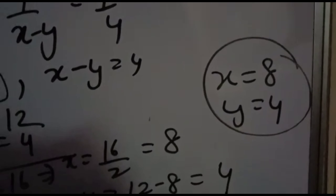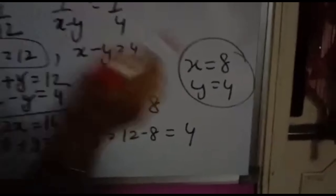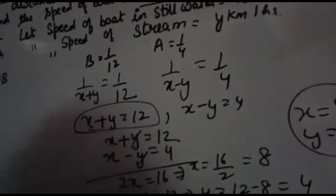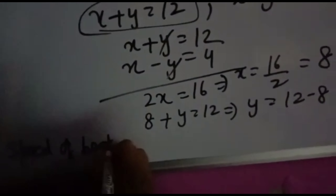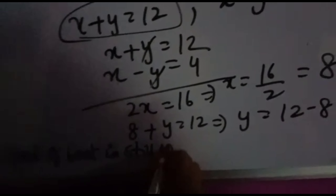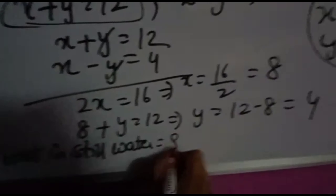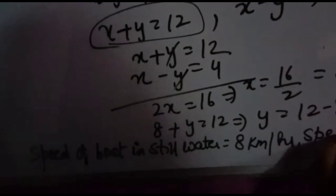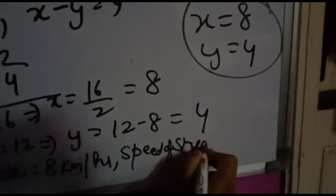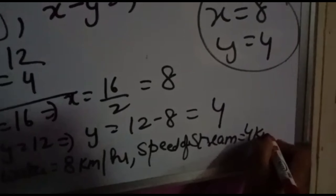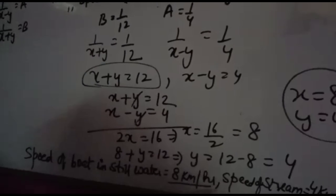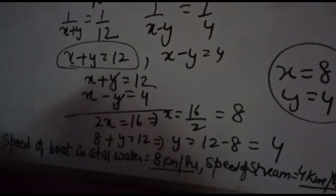Don't stop here — write the final answer clearly. Since we assumed speed of boat in still water equals x km per hour, the speed of boat in still water is 8 km per hour. Since we assumed speed of stream equals y km per hour, the speed of stream is 4 km per hour. Thank you.